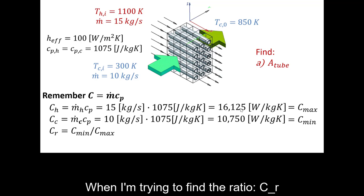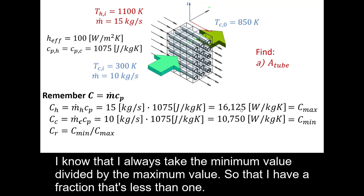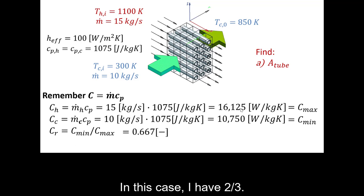When I'm trying to find the ratio, big C sub R, I know that I always take the minimum value divided by the maximum value so that I have a fraction that's less than one. In this case, I have two thirds.